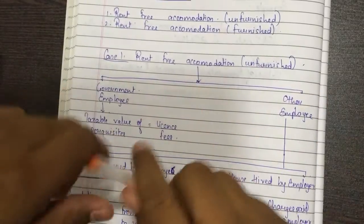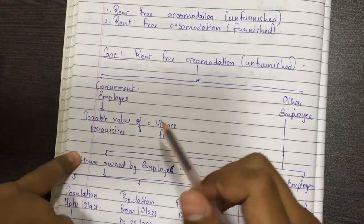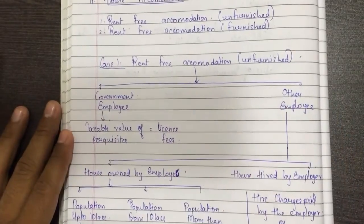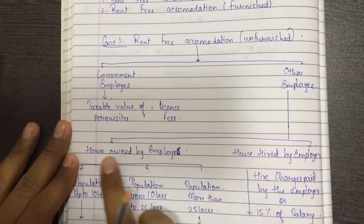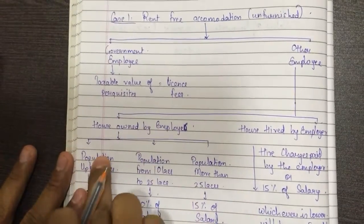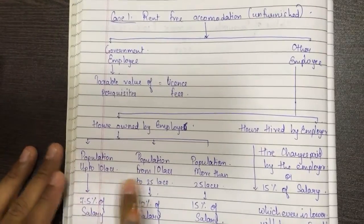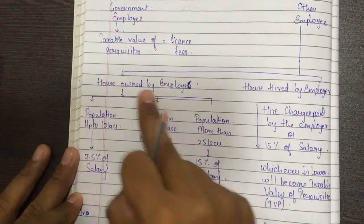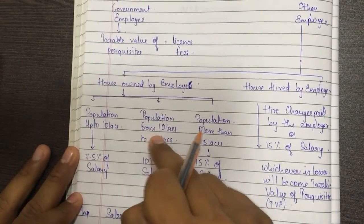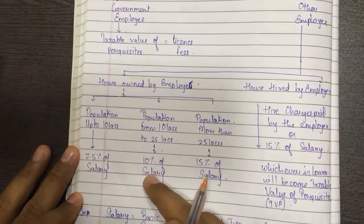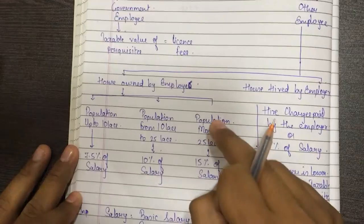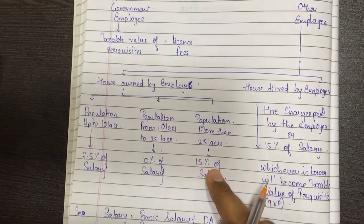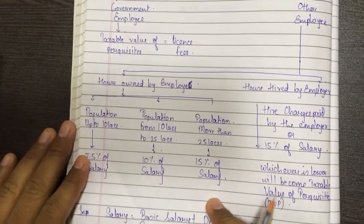To summarize Case 1: it bifurcates employees into two — government employees and other employees. If you are a government employee, the taxable value of the perquisite equals the license fee given in the question — you just substitute that value. For other employees, if the house is owned by the employer: population up to 10 lakhs gives 7.5% of salary; population 10 to 25 lakhs gives 10% of salary; population more than 25 lakhs gives 15% of salary as the taxable value of perquisites.